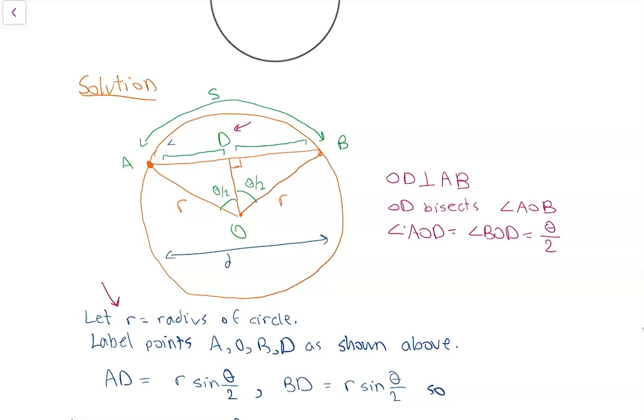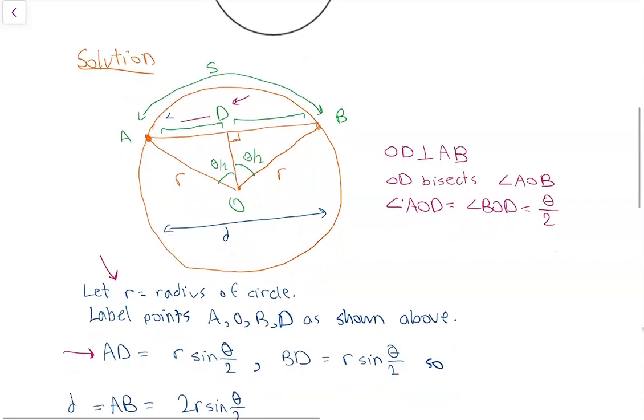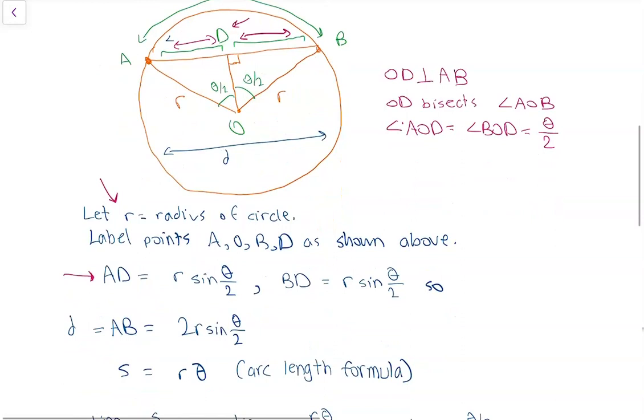This gives us using trigonometry we have AD is equal to r times sine theta over 2 and BD is also equal to r times sine theta over 2. If we add up AD and BD, we get the value of d and this is going to be equal to 2r times sine theta over 2.